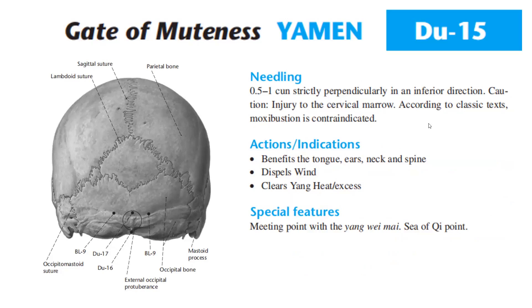For the action indications, Du 15 benefits the tongue, ears, neck, and spine; dispels wind; clears yang heat and excess. For special features, Du 15 is the meeting point with Yang Wei Mai, and a Sea of Qi point.